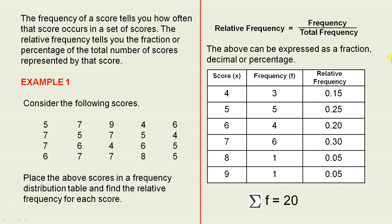The frequency of a score tells you how often that score occurs in a set of scores. The relative frequency tells you the fraction or percentage of the total number of scores represented by that score. Let's have a look at example 1 to see how relative frequency works.